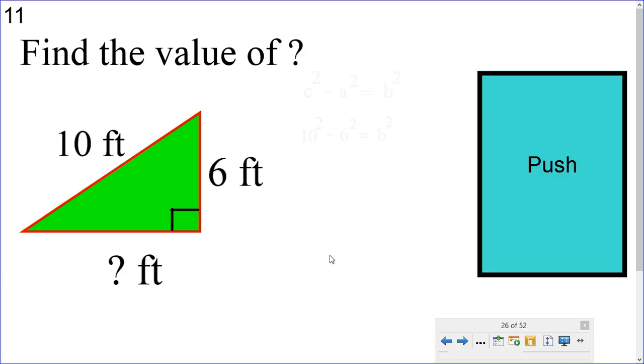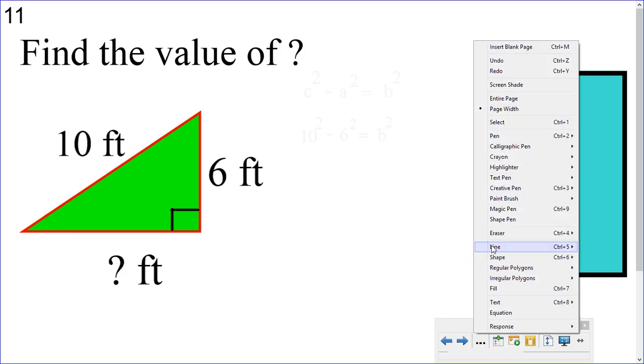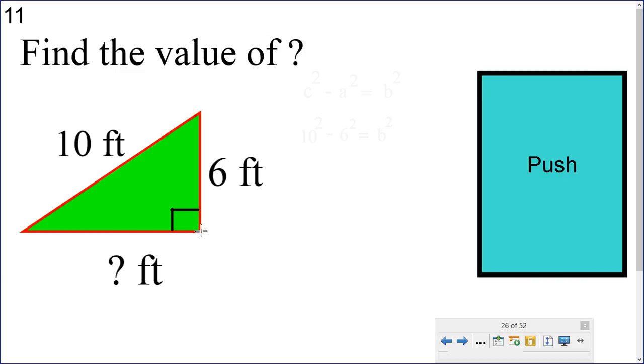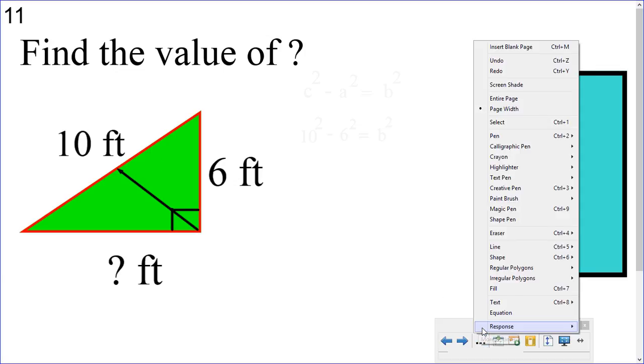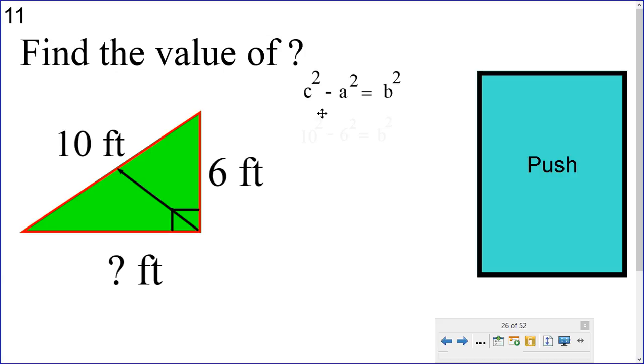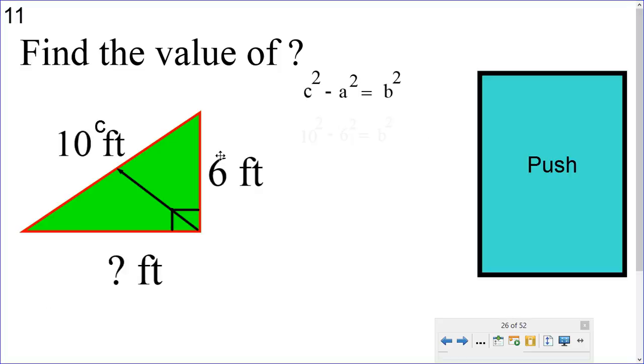First side I'm going to find is the hypotenuse. So, if you remember, the hypotenuse is located at the opposite of the right angle. So, I notice they have our triangle turned backwards. So, my C side or hypotenuse is going to be 10 feet. So, now that I know that, I'm going to get my formula. Here's my formula. C squared minus a squared equals b squared.